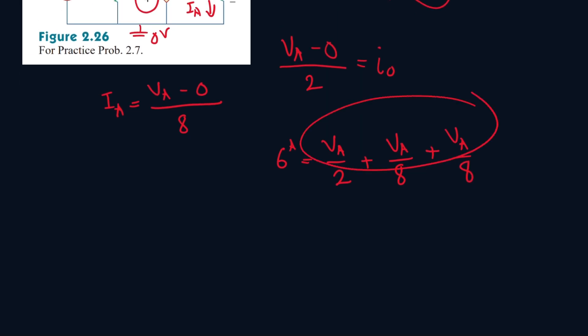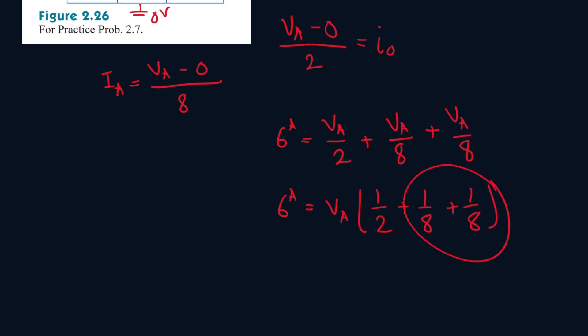Let's take VA out of all of these. So we'll have 6 amps plus VA times 1 over 2 plus 1 over 8 plus 1 over 8. And this is just 2 over 8, which is 1 over 4.